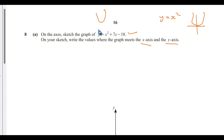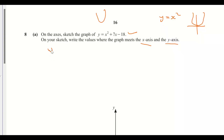The intercept on the y-axis: when you set x equal to zero, y equals x squared plus 7x minus 18 gives y equals negative 18. So the y-intercept is negative 18.